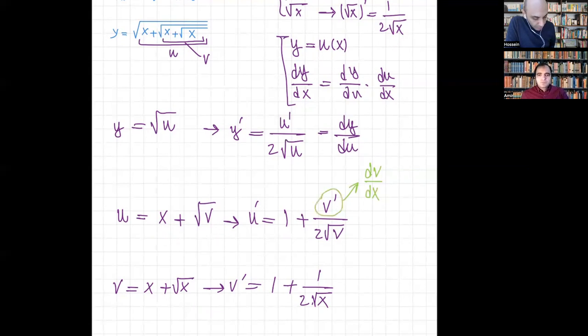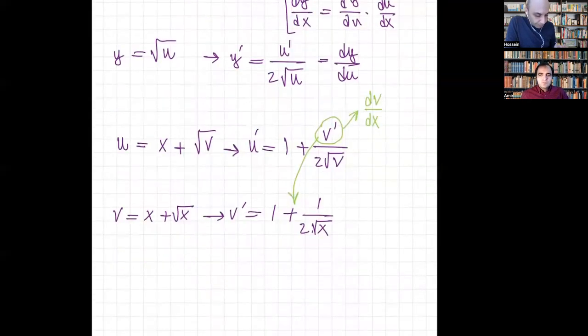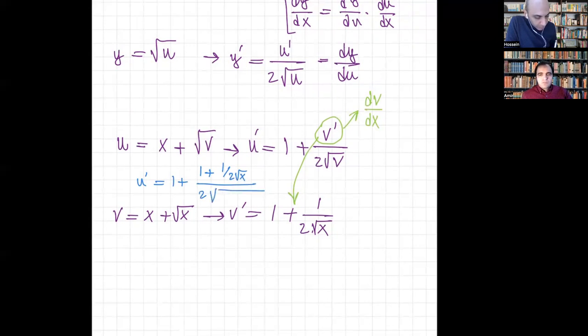So I'm going to just substitute back all the terms. So instead of this v prime here, I'm going to use this term here that I obtained. So probably I'm going to use the space between the lines. So tell me if this is understandable. So u prime equals to one plus, perhaps you use a different color. Okay, I use a different color. So u prime equals to one plus, instead of v prime, I have one plus one over 2 times the square root of x divided by 2 times the square root of v, which is x plus the square root of x. That's correct.